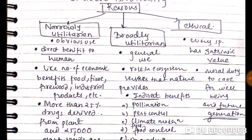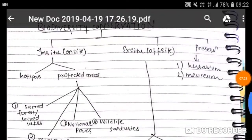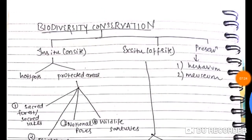The third category is ethical — every species has intrinsic value, and we have a moral duty to care for the well-being of all species and for future generations. Biodiversity conservation can be done by two ways: in-situ conservation and ex-situ conservation.